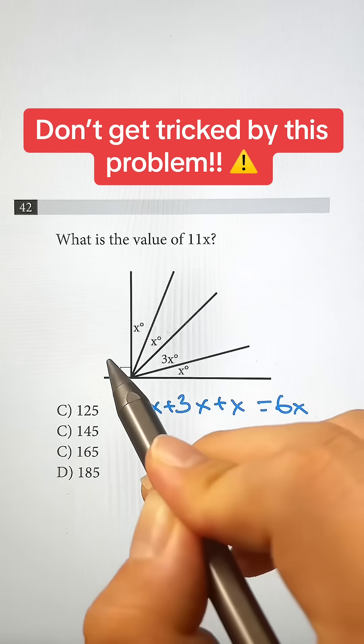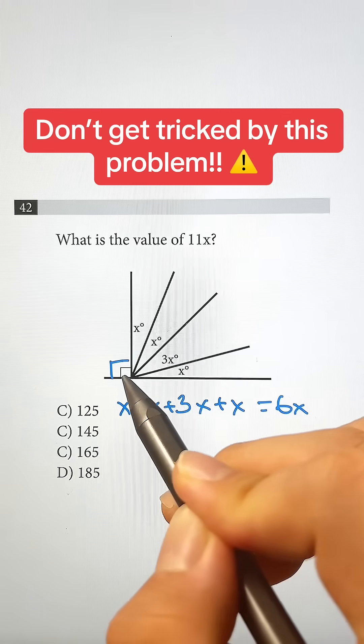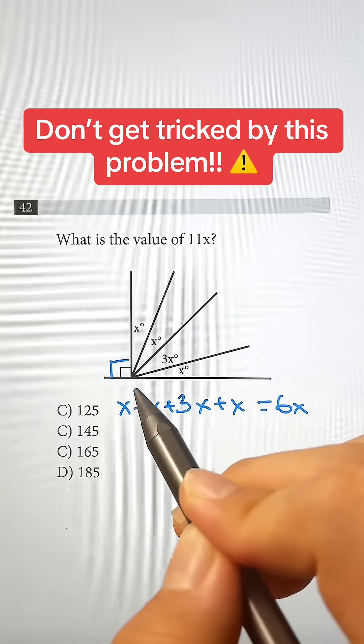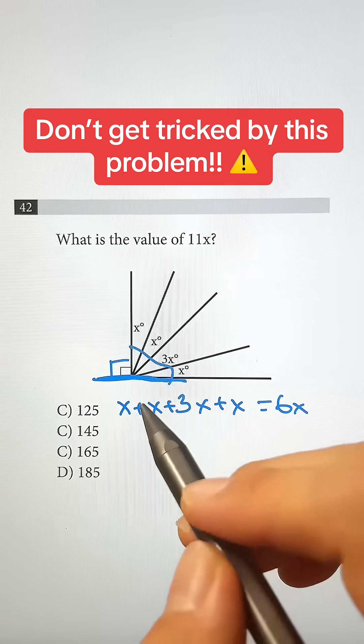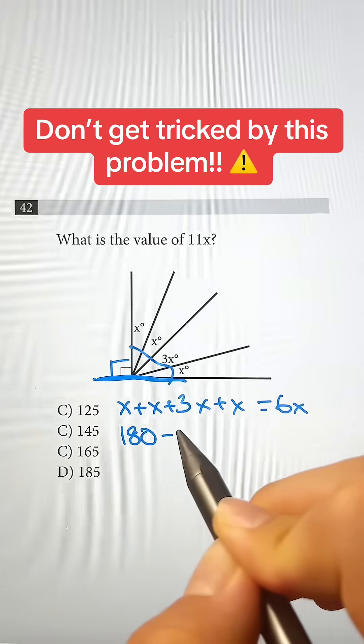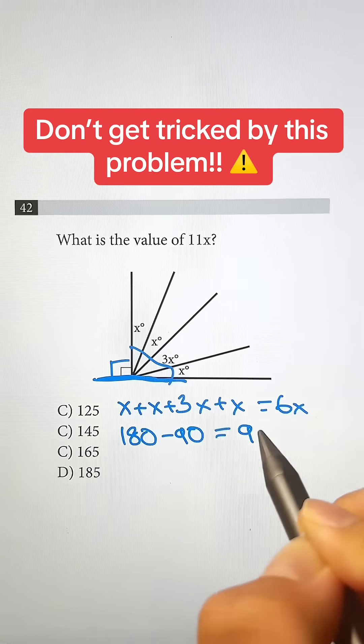Now we know that over here is a right angle, which means that it's going to be 90 degrees, and we have a straight line over here which is 180 degrees. So to find this section over here, we just have to do 180 minus 90, which is going to give us 90 degrees.